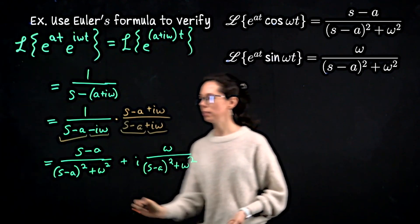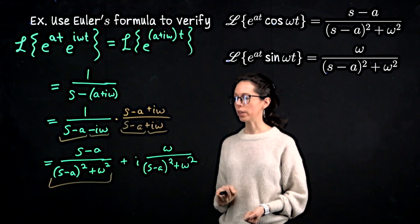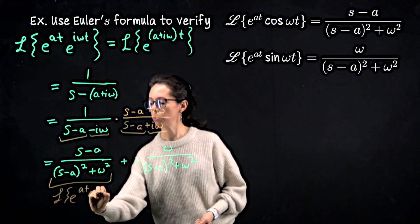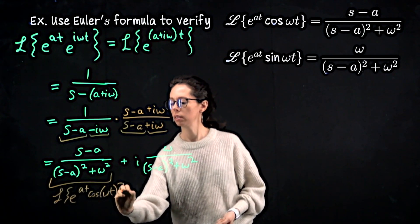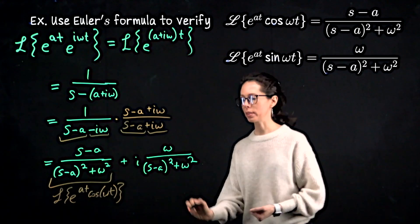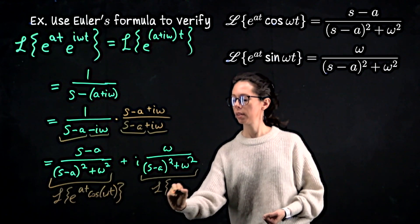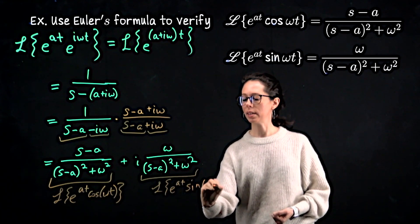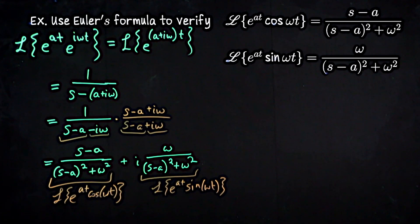The real part goes with cosine: s minus a over s minus a squared plus omega squared is the Laplace transform of e to the at cosine of omega t. And the imaginary part goes with sine: omega over s minus a squared plus omega squared is the Laplace transform of e to the at sine of omega t.